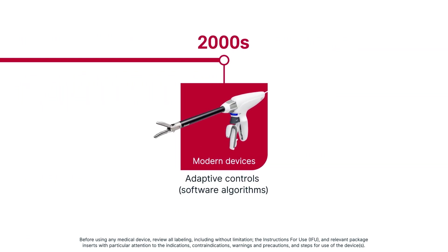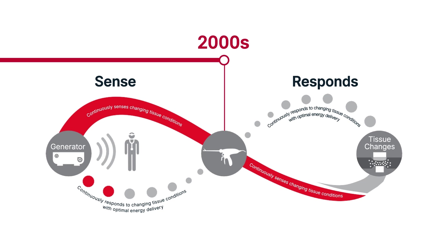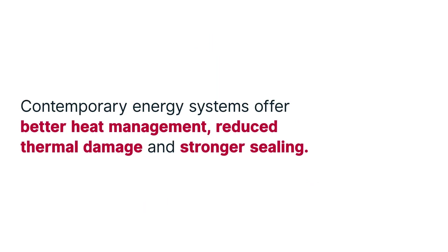By the 2000s, medical device manufacturers of advanced bipolar devices applied adaptive controls or software algorithms in the generators which powered the devices. The device, along with the generator, senses changes in the electrical impedance of the tissue during the sealing cycle and alters the energy output to minimize thermal damage. These contemporary energy systems offer better heat management, reduced thermal damage, and stronger sealing.